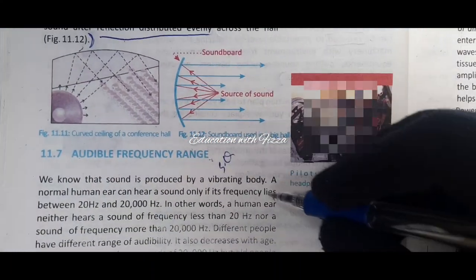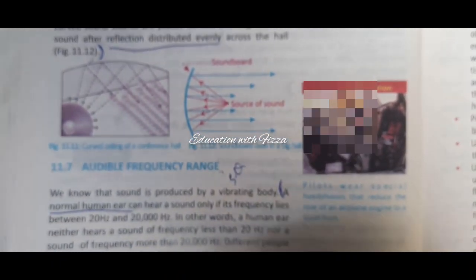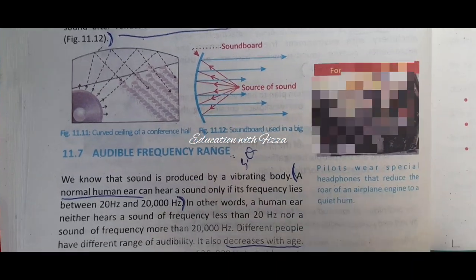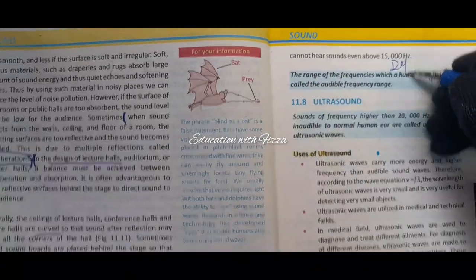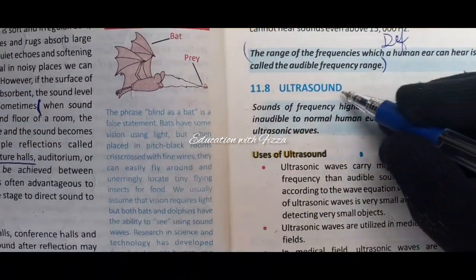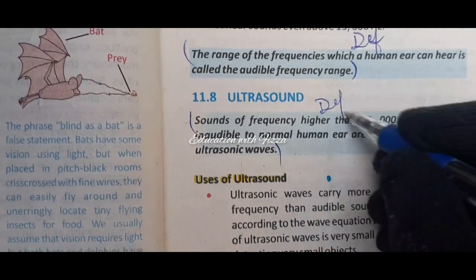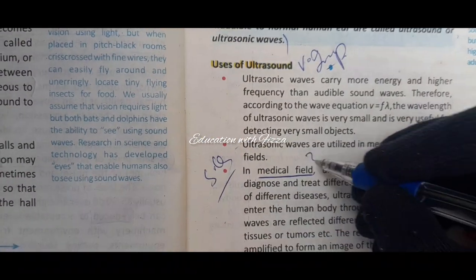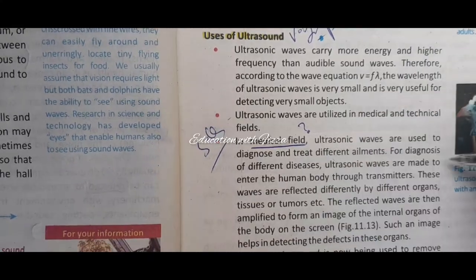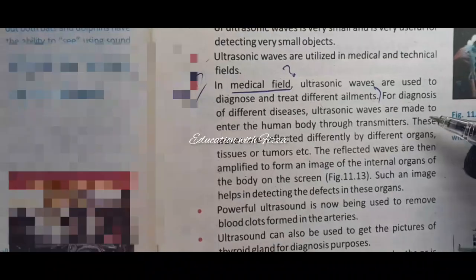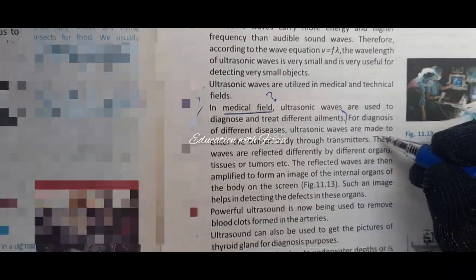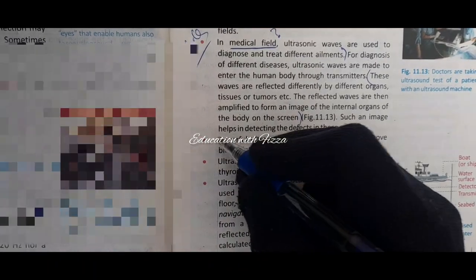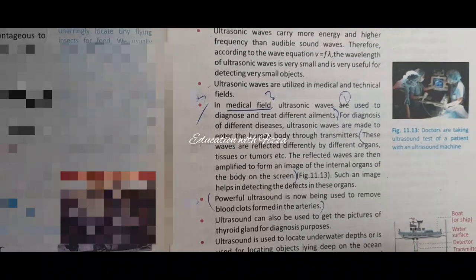The audible frequency range is very important for MCQs. The human ear can hear from 20 Hz to 20,000 Hz. After that, know that with age this range decreases. Then learn ultrasound and its uses — uses of ultrasound are very important. You must remember its uses in the medical field and industrial systems. Make separate points: first point, second point, third point.